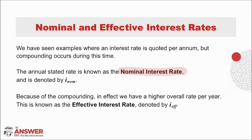We can write nominal interest rate as I with a subscript NOM. To distinguish between this nominal per annum stated interest rate and the interest rate that comes into effect when compounded several times during a time period, we need to understand the actual effect of compounding interest more frequently. This is referred to as the effective interest rate, denoted I subscript EFF.